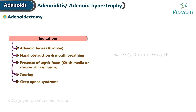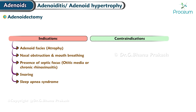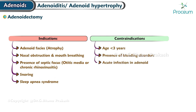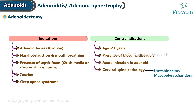Sleep apnea syndrome also indicates the need for adenoidectomy. Contraindications for adenoidectomy include: age younger than three years, presence of bleeding disorders, acute infection in the adenoid area, cervical spine pathology such as an unstable spine or conditions like mucopolysaccharidosis that may pose risk during surgery, and epidemic of poliomyelitis — when adenoidectomy should be avoided.